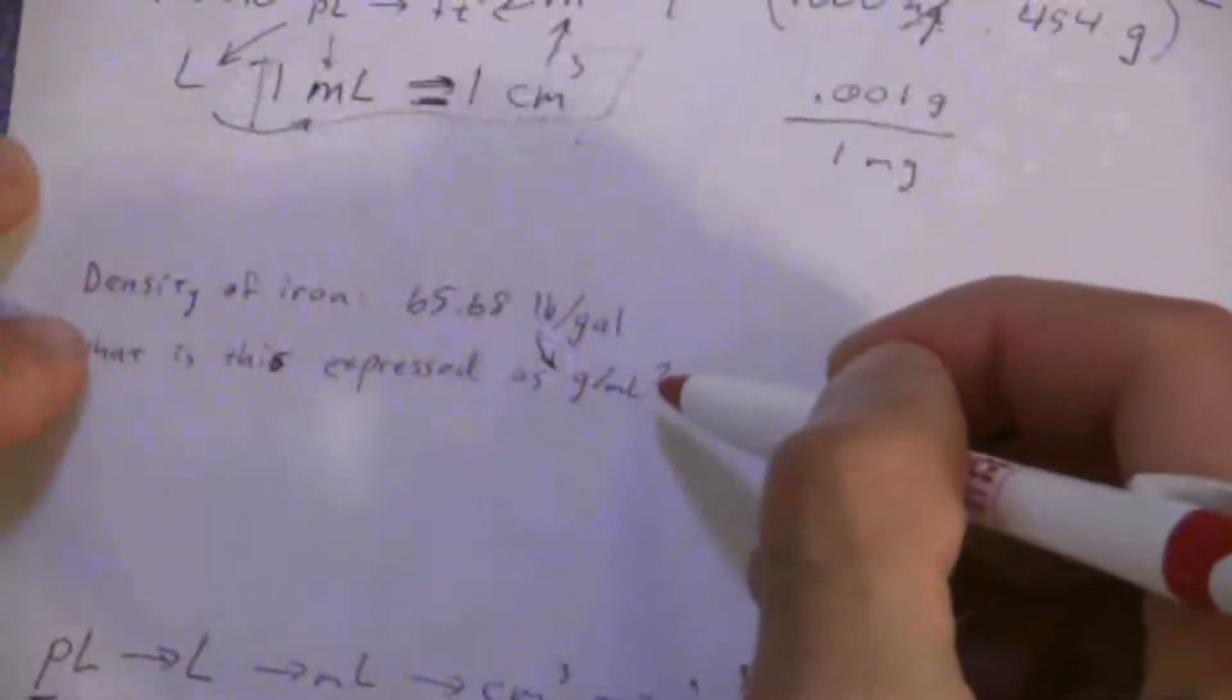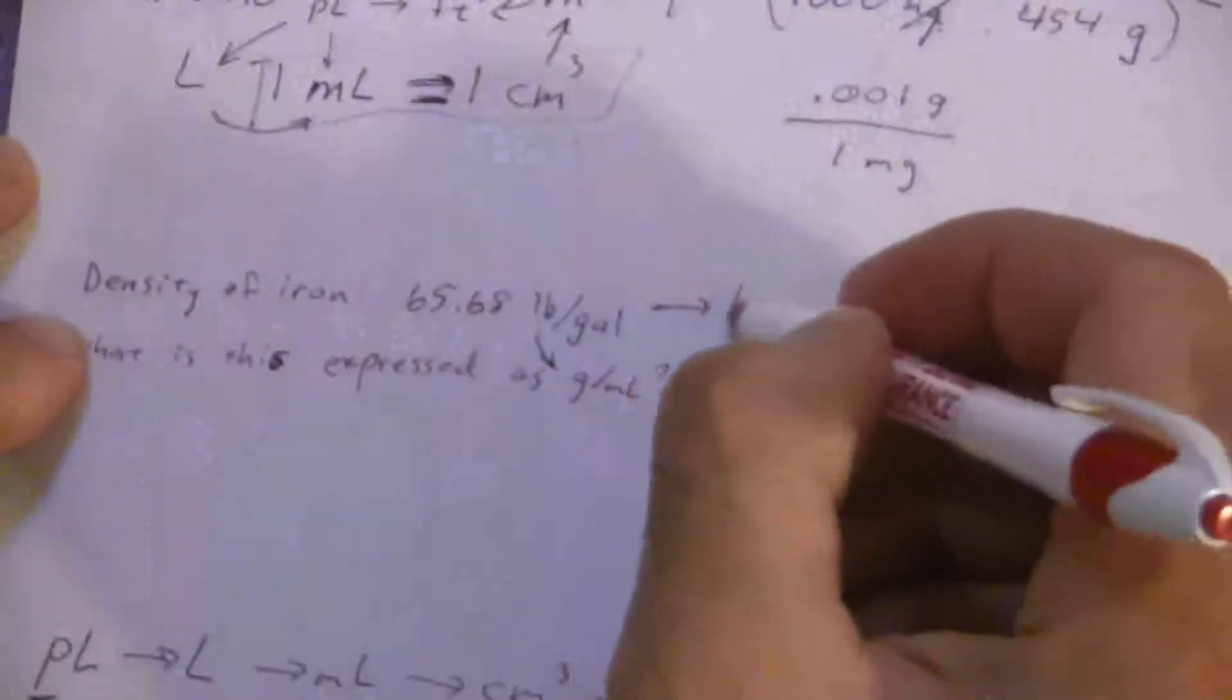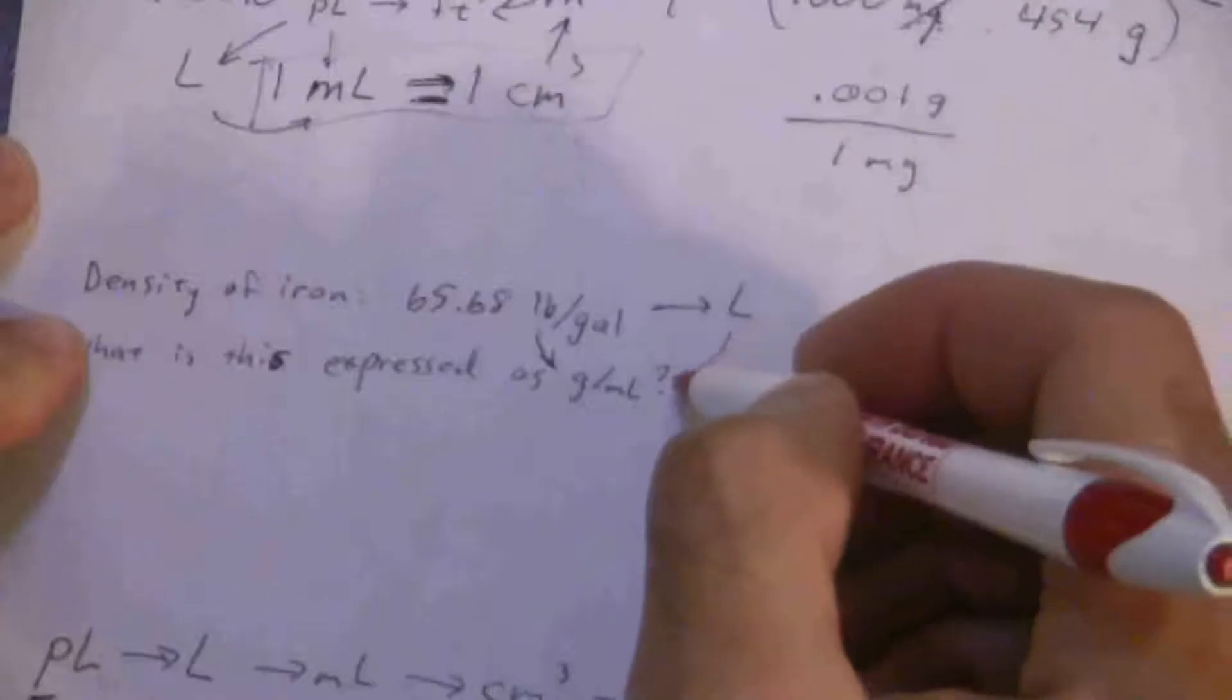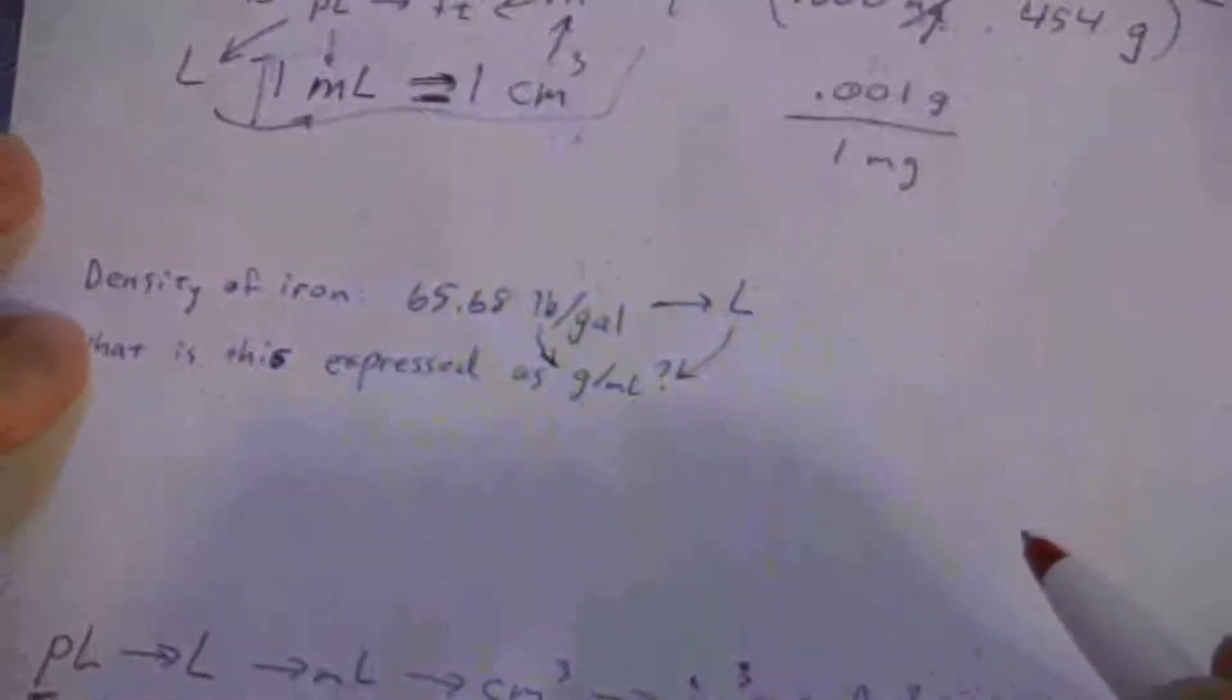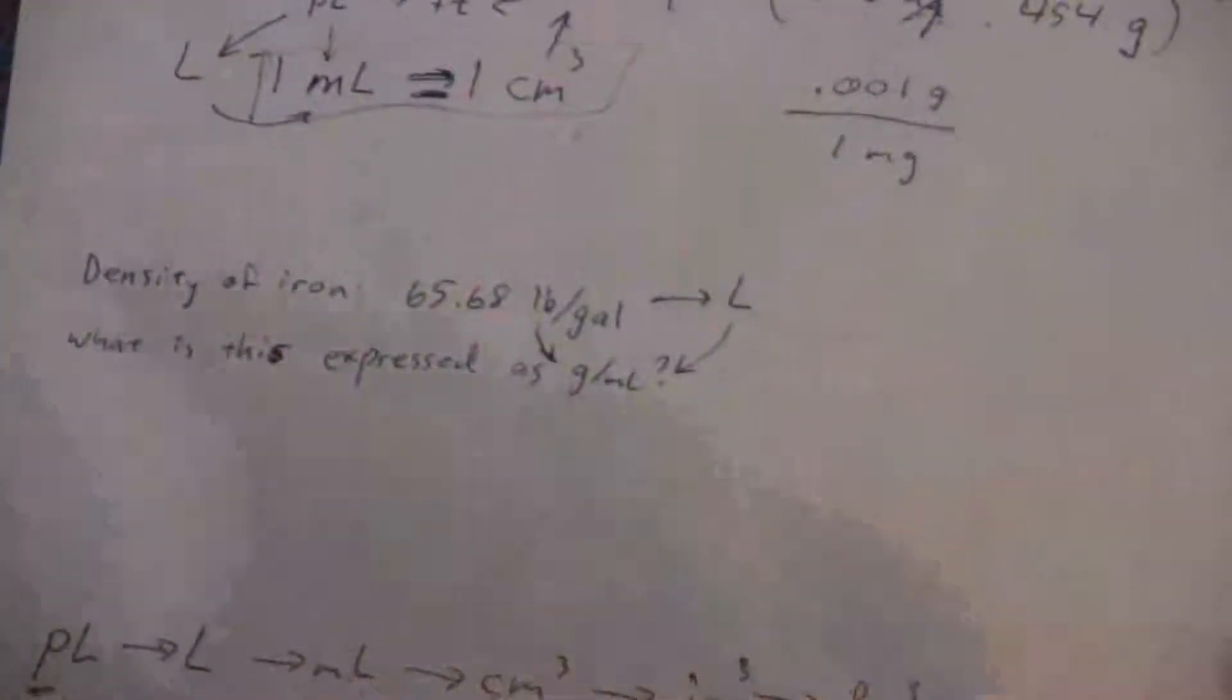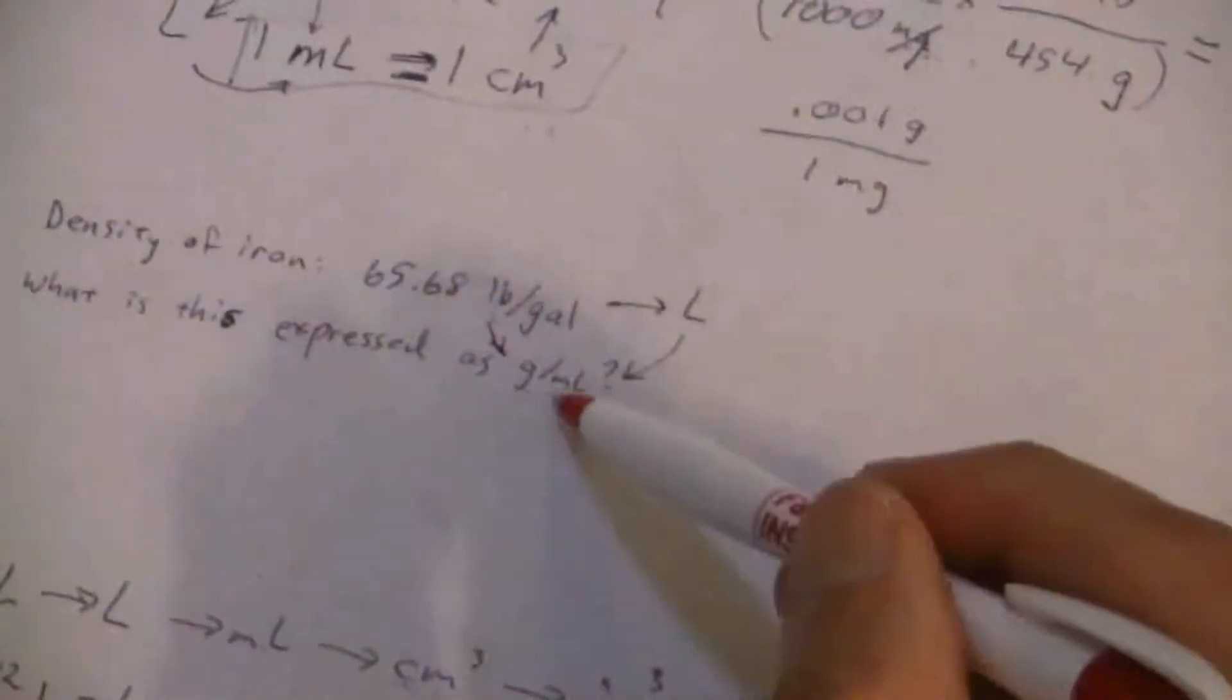Now gallons to milliliters, I don't know that one offhand, but I do know gallons to liters and from liters I can get the milliliters. So this is a two-step problem and we're going to do both of them kind of together.